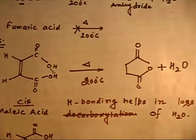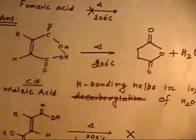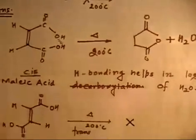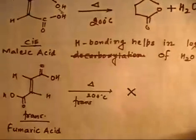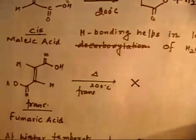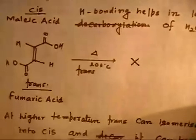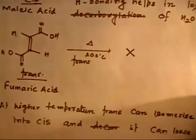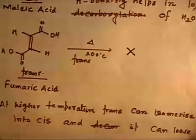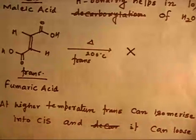Now, if you see the corresponding trans part of the same molecule — this is called fumaric acid. There is no such kind of hydrogen bonding possible in the case of fumaric acid. And that is why no reaction happens.